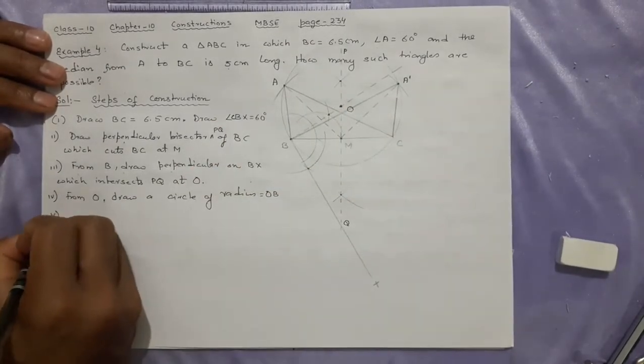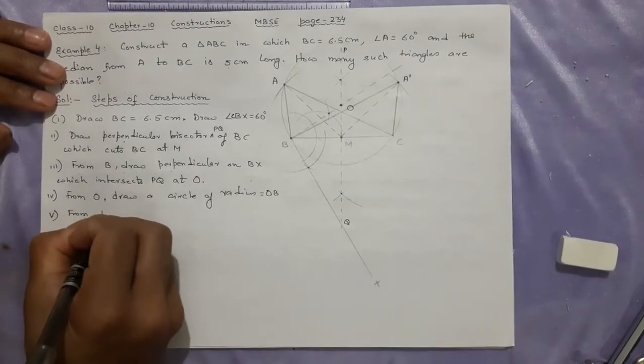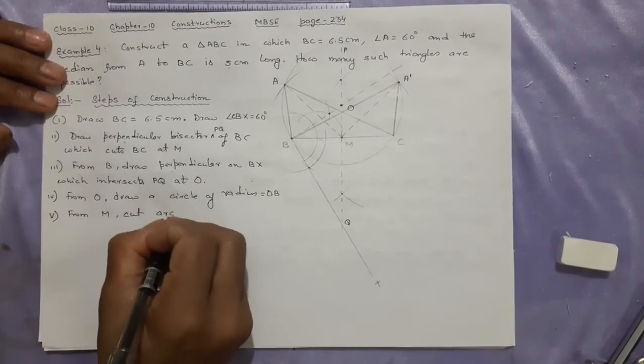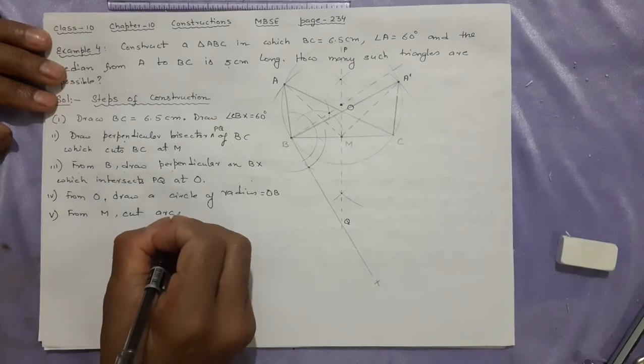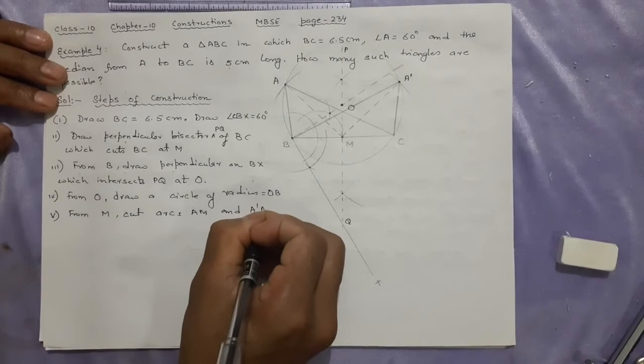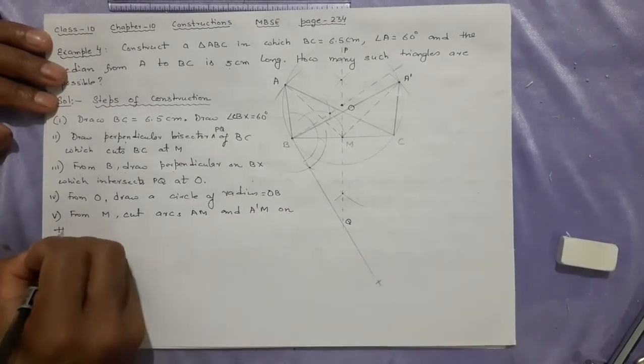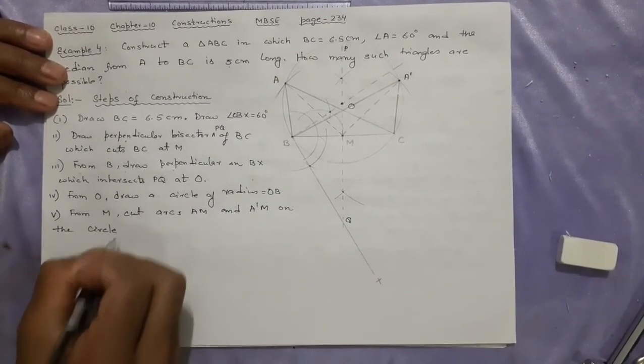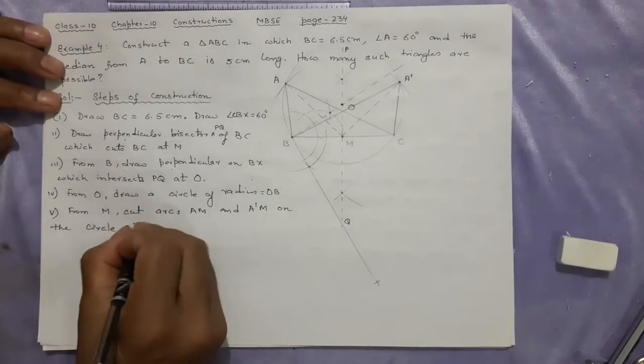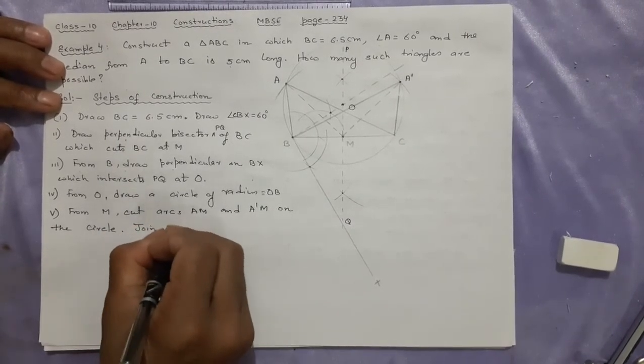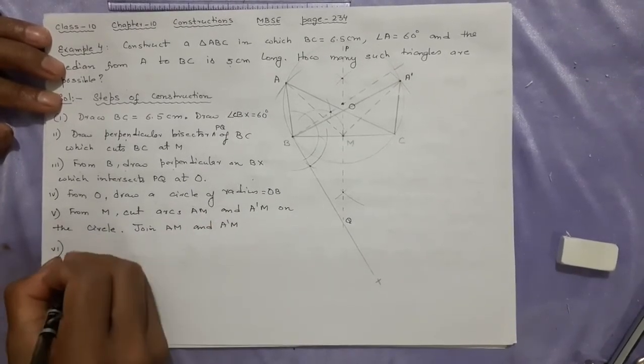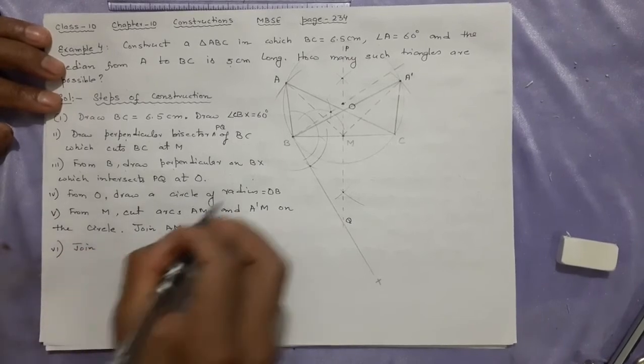Let's finish. From M, cut arcs AM and A dash M on the circle. You can also write join AM and A dash M.